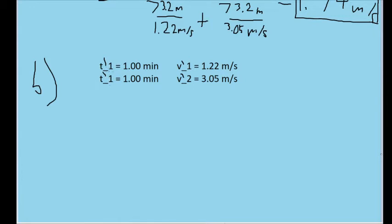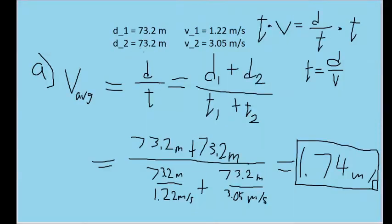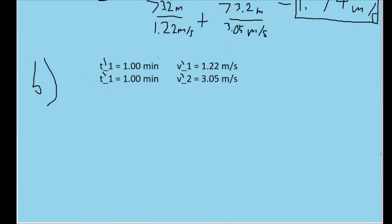So we know that we are walking for one minute at a speed of 1.22 meters per second, and then we run for one minute at a speed of 3.05 meters per second. And I've written little primes next to all the variables to emphasize that these are not the same variables we worked with in part A, though it probably doesn't matter too much.